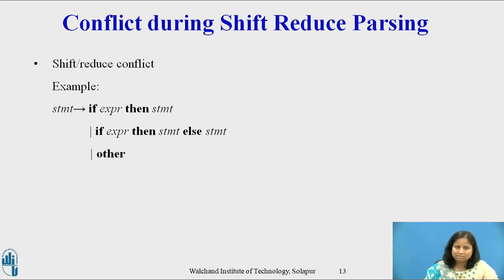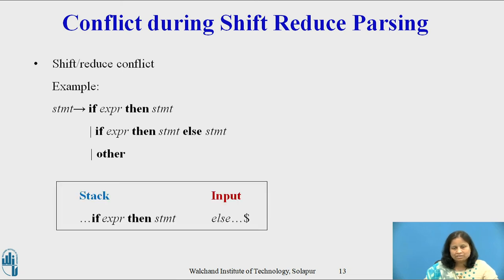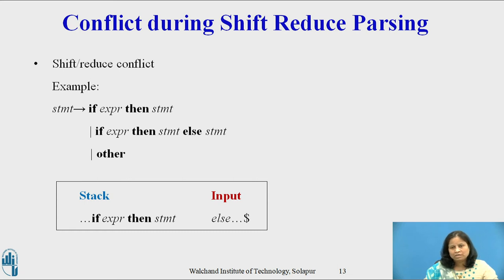Consider the example: statement derives if expression then statement, or if expression then statement else statement, or other. If we have a shift-reduce parser in the configuration where the stack contains 'if expression then statement' and the input is 'else $', we cannot tell whether 'if expression then statement' is the handle no matter what appears below it on the stack — so there is a shift-reduce conflict. Depending on what follows else on the input, it might be correct to reduce 'if expression then statement' to statement, or it might be correct to shift else and look for another statement to complete the alternative. So this grammar is not LL(1).